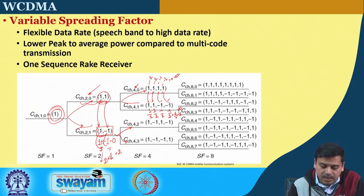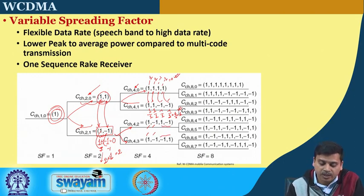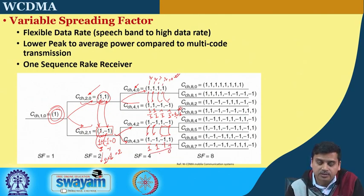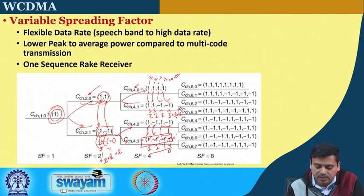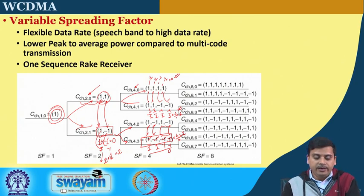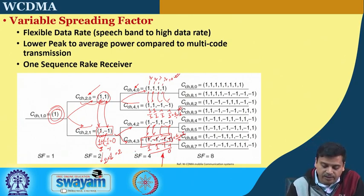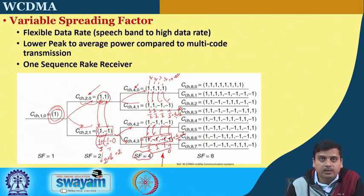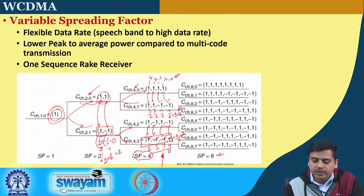Similarly, the code [1, −1] can be expanded to [1, −1, 1, −1] and [1, −1, −1, 1]. Cross-multiplying these two gives 1, 1, −1, −1, summing to 0. Multiplying by the same code gives all positives summing to 4, normalized to 1. This property of zero cross-correlation and unity auto-correlation is maintained at each stage. You can proceed further to a spreading factor of 8, generating many orthogonal codes by continuing this tree structure.